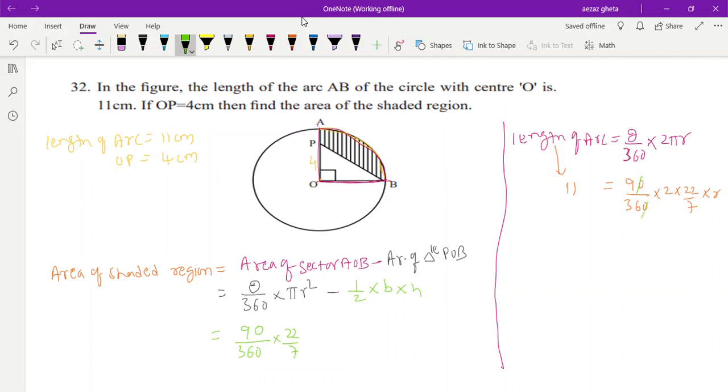11 is equal to 1/4, 2 into 22/7 into r. 11 is equal to 11/7 into r. You cross multiply: 7 and cross this here, 11 into 7 divided by 11 is equal to r. This 11 and this 11 will get cancelled. R is equal to 7 centimeter, is it clear everybody?